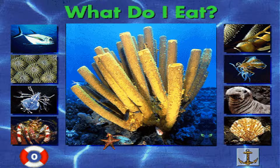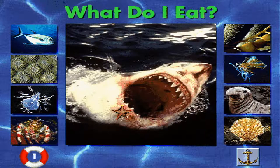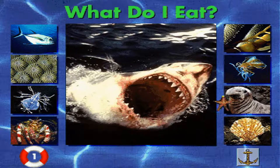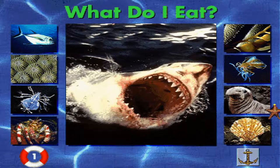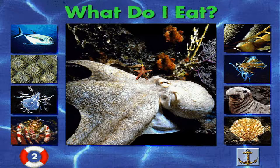What do I eat? I'm a sponge. What do I eat? Now that's tasty. I most definitely prefer plankton. I'm a great white shark. What do I eat? I don't think so. Keep looking. I just love a good elephant seal. I am an octopus. What do I eat?